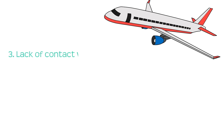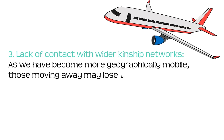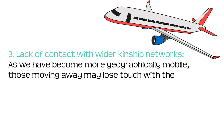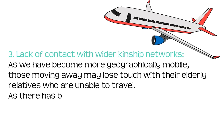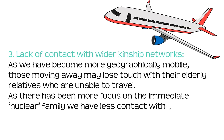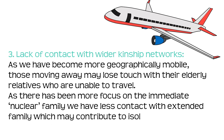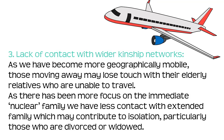Number three: lack of contact with wider kinship networks. As we have become more geographically mobile, those moving away may lose touch with their elderly relatives who are unable to travel. As there has been more focus on the immediate nuclear family, we have less contact with extended family, which may contribute to isolation, particularly for those who are divorced or widowed.